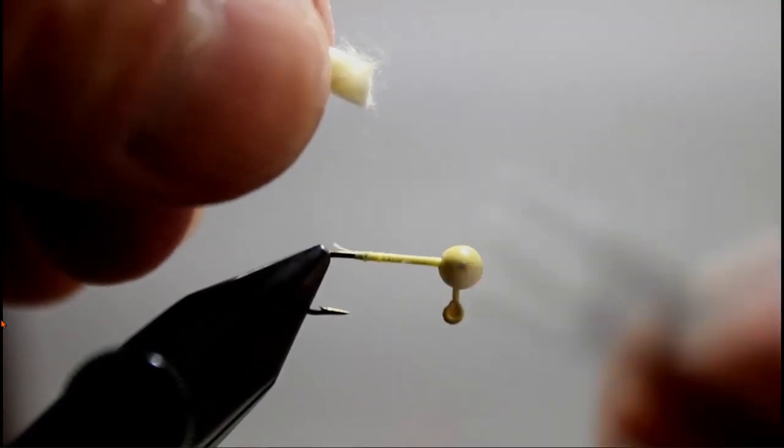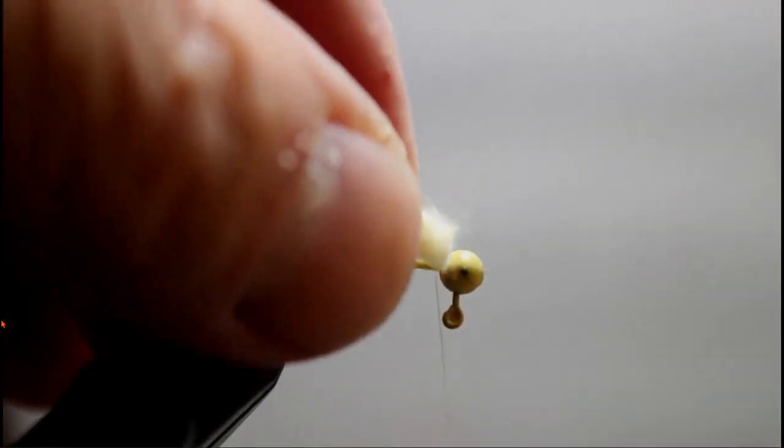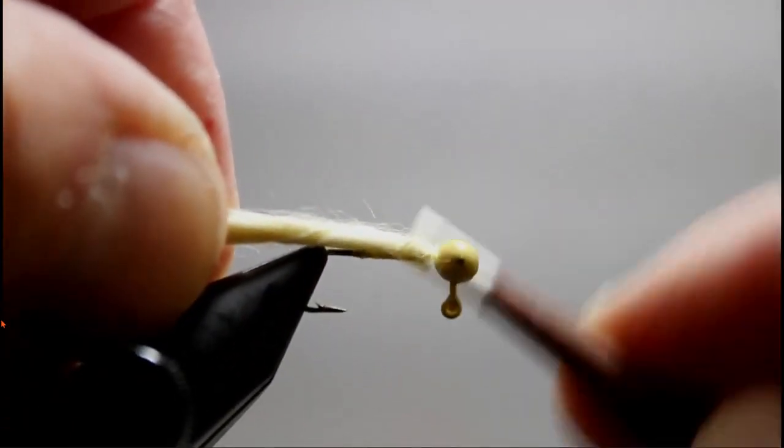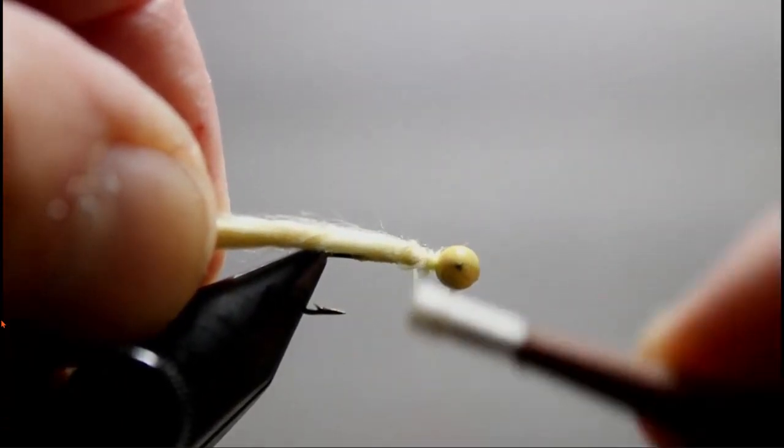Advance your thread right behind the lead head of the fly and then take the bedspread material and tie it in. Take your thread to just behind the hook point as shown here.